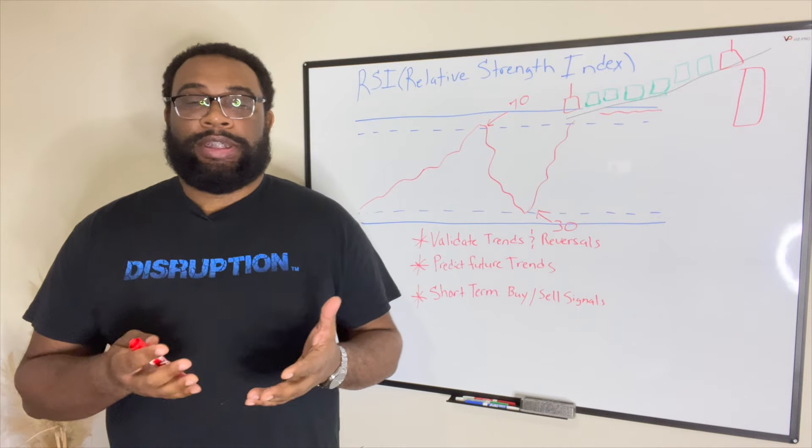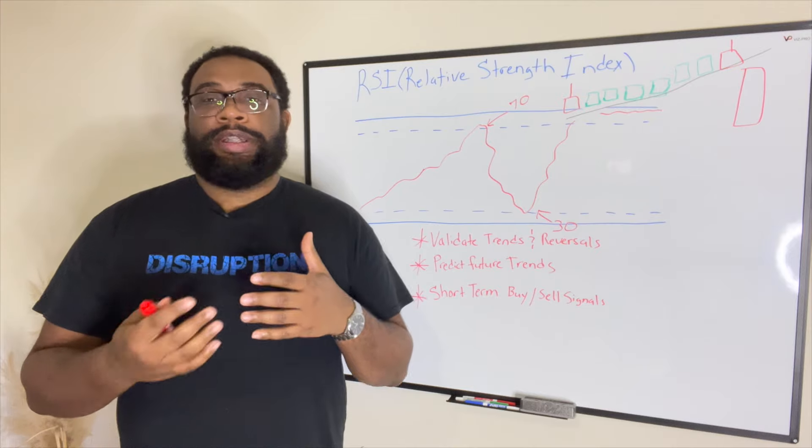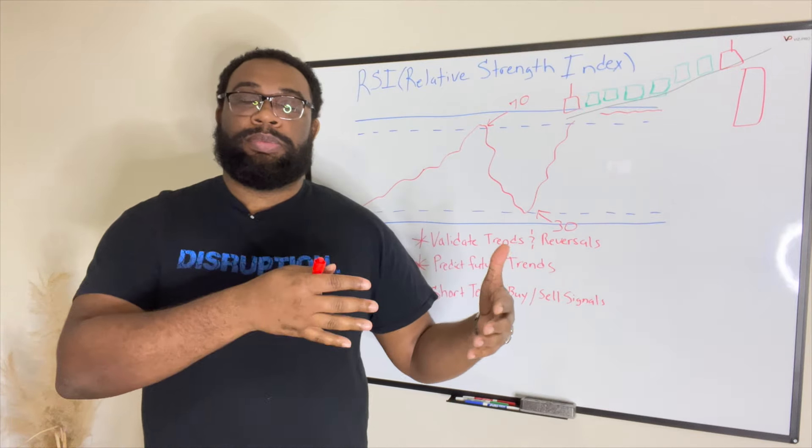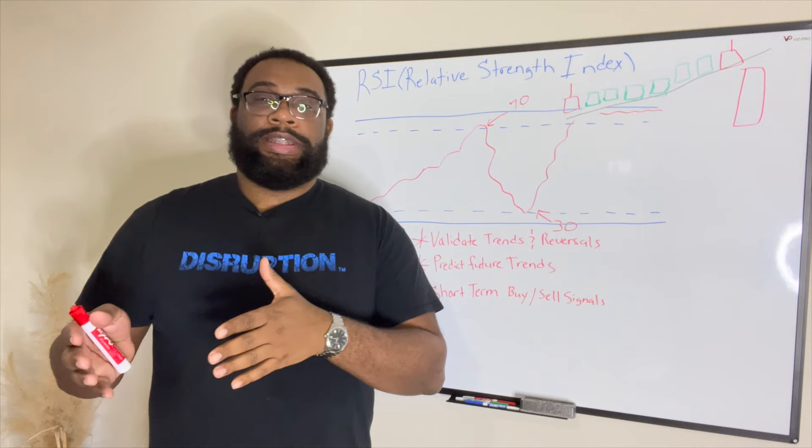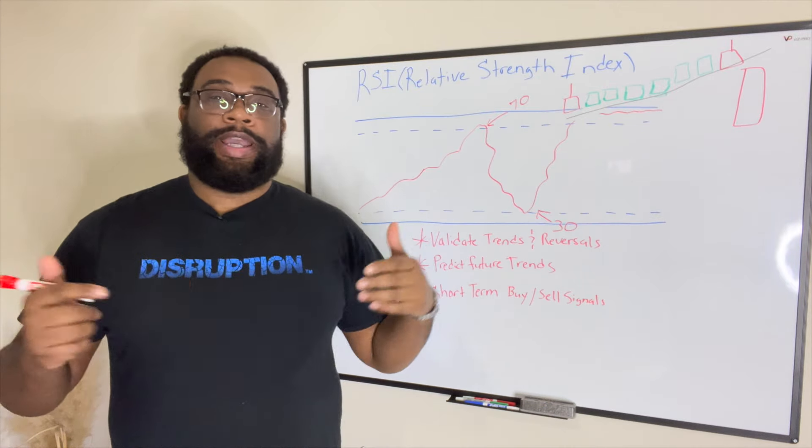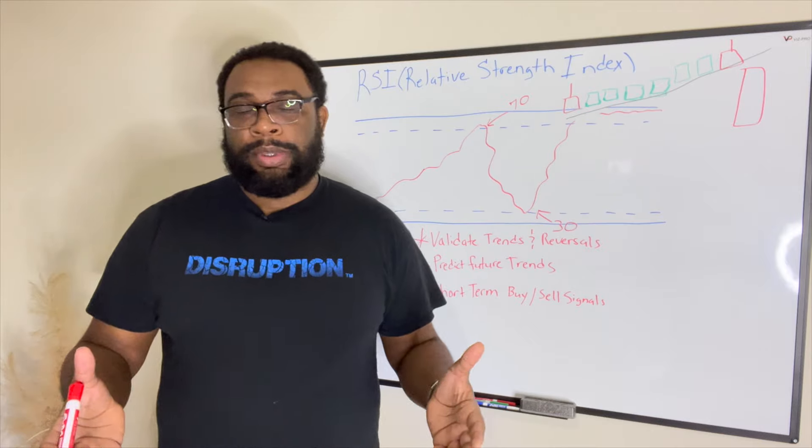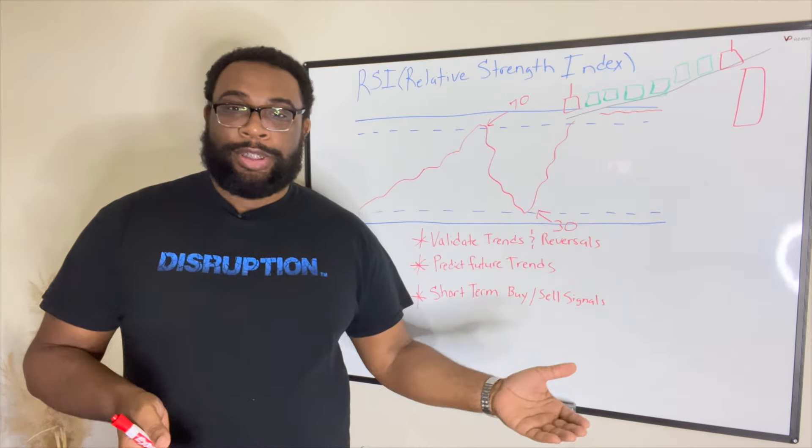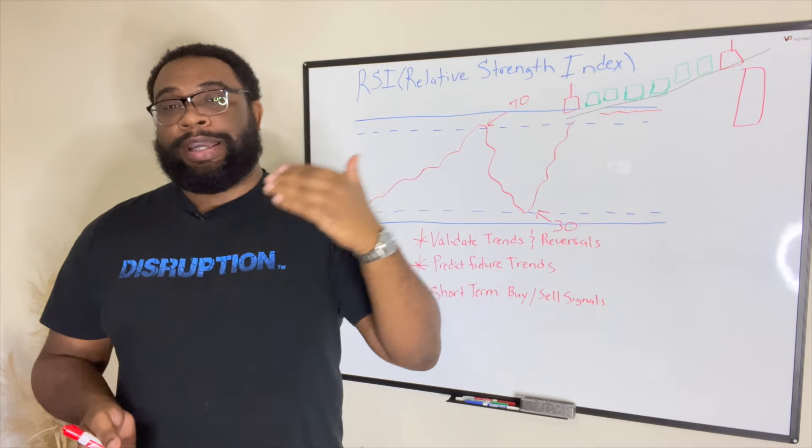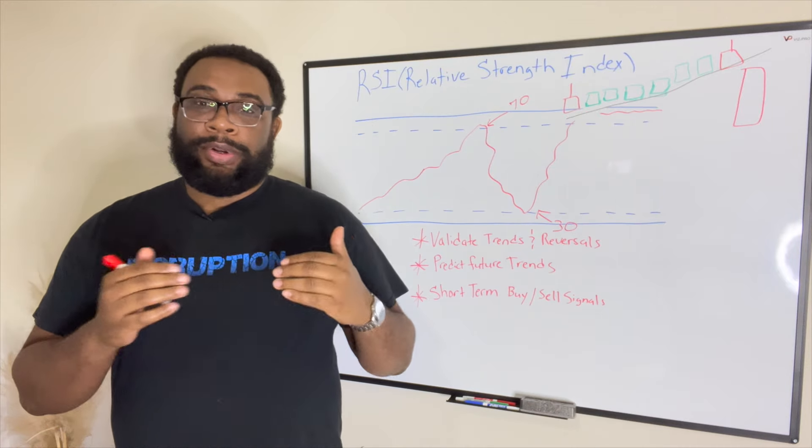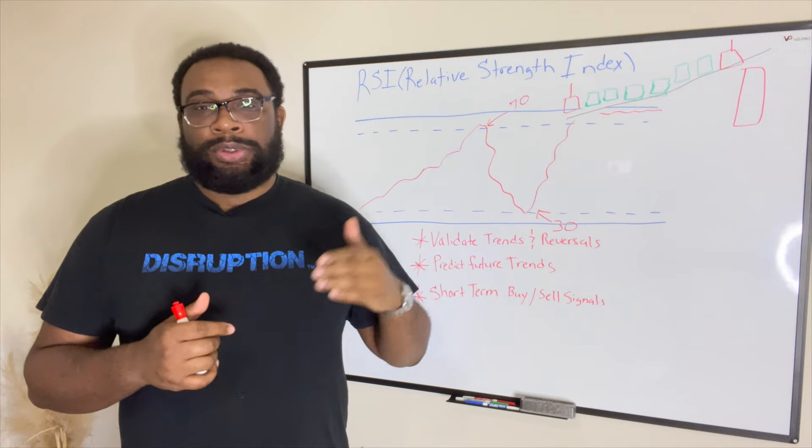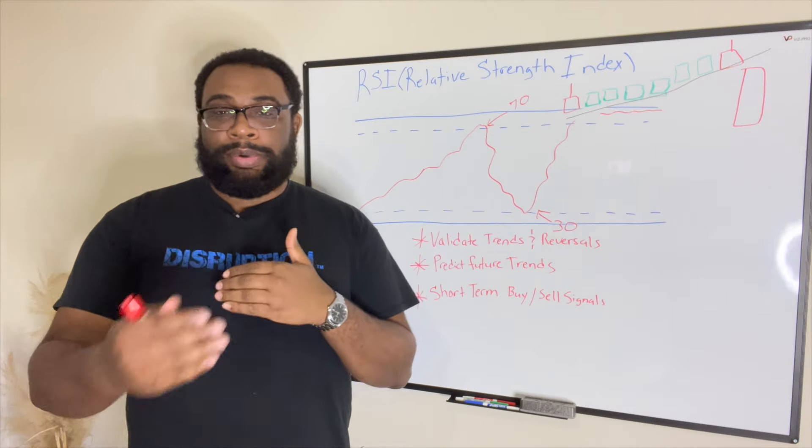If Michael Jordan averaged 30 points per game for the season and during the finals he started averaging 45 points per game, what's the likelihood that he would continue to average 45 points per game or would he come back down to his normal average of around 30 points per game? This is kind of what you're going to get between overbought and oversold to get an idea of future price action.